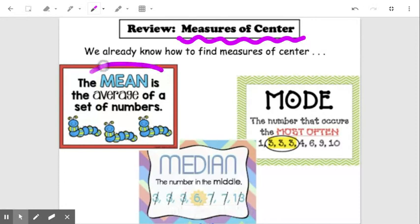So again, we are talking about measures of center, the description of what's happening in the middle of a data set. So the first one we have is mean. Remember mean is the average, and to find an average, you add everything up and you divide by how many numbers you have.